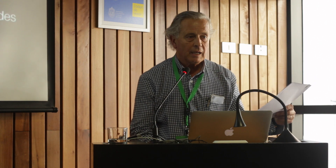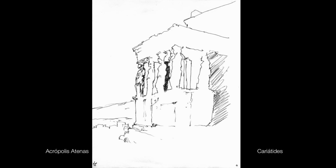La columna pudo llegar a limitar con la escultura en las cariátides. Ahí están las cariátides. La columna atraviesa toda la arquitectura occidental y ha sido un elemento constructivo del espacio habitable en varias dimensiones que no vamos a tratar aquí.